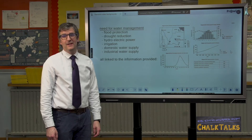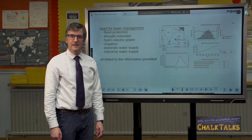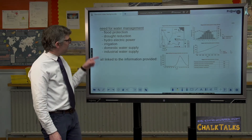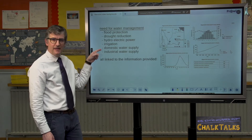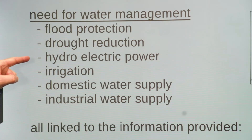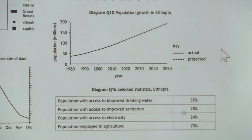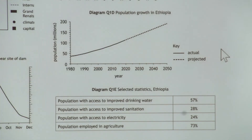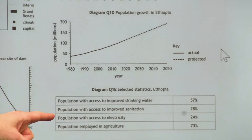As soon as you have information about an increasing population or even a large city, you can detail all of the different needs that people have for water. This would include domestic water supply — cooking, drinking, washing and sanitation — but also irrigation of crops and electricity generation. In this example, you would want to link the rising population in Ethiopia, predicted to reach 200 million by 2050, to all of these needs. Additionally, the statistics about access to improved drinking water and electricity should be referenced to emphasise the need.